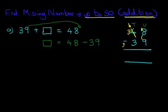That's the units column. 18 minus 9 is 9. As for the tens, it's 3 minus 3, the answer is 0. So therefore, 48 minus 39 is 9. And that is our answer.